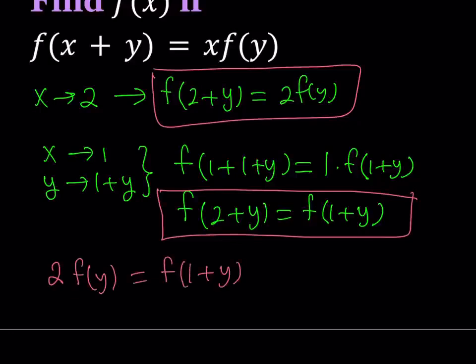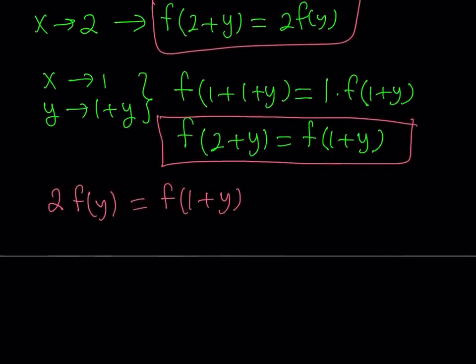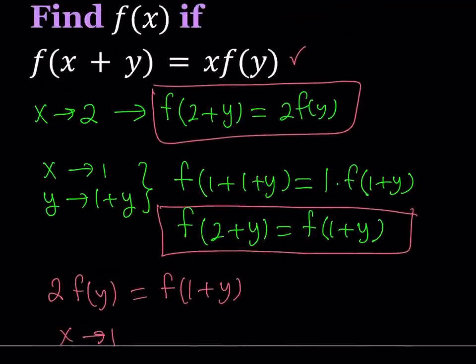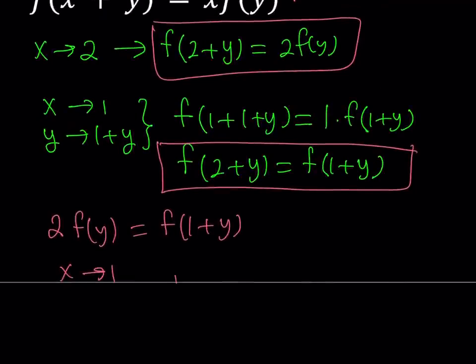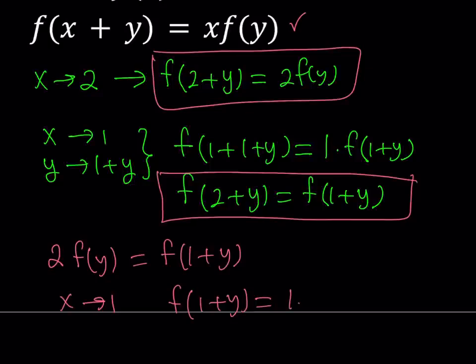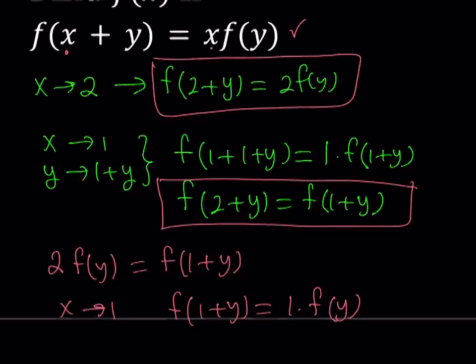Now, how does this help us? Well, look at the right-hand side. We have f(1+y), and look at the original equation here. We can actually use that to obtain f(1+y). So if you replace x with 1 and leave the y unchanged, you get the following: f(1+y) = 1·f(y). Oops, I wrote f(2). f(y), right? Just replace x with 1 here and here, and then leave the y unchanged, and that's what you get.